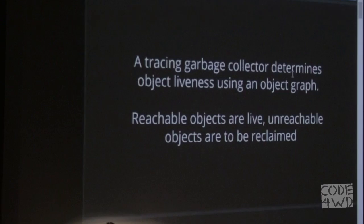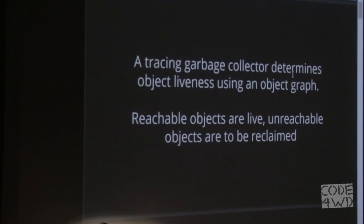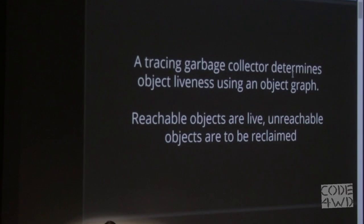The way tracing garbage collection works is that at some point the choice is made that your memory needs to be examined so that we can clean up and reuse it later on. The program decides this is necessary and will find the objects it can immediately see — local variables on the stack, for example. Through those, it traverses all reachable objects. Those are considered live and have to stay around. In other words, the liveness of memory is determined by being reachable through a graph.